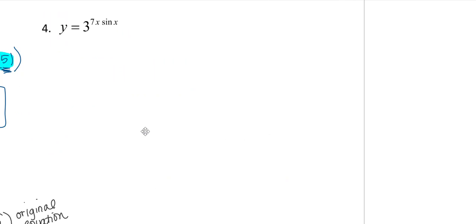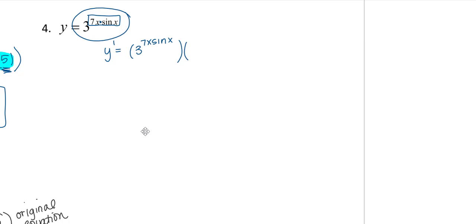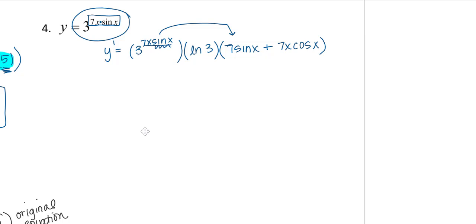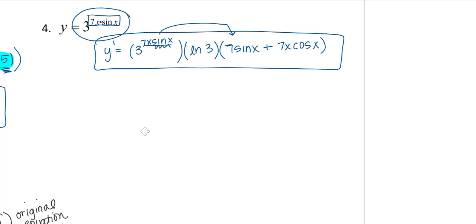For the last example, y equals 3^(7x·sin x). Applying the exponential derivative rule directly: y prime equals the original function times natural log of 3 times the derivative of the exponent. The exponent 7x·sin x requires the product rule: derivative of 7x is 7, leave sin x alone, plus leave 7x alone and take derivative of sin x which is cos x. So the derivative of the exponent is 7 sin x plus 7x cos x.